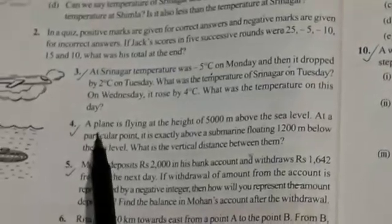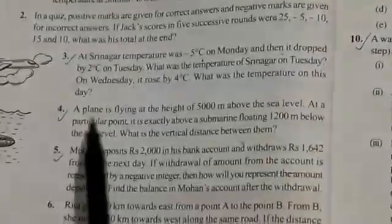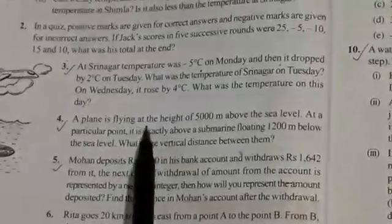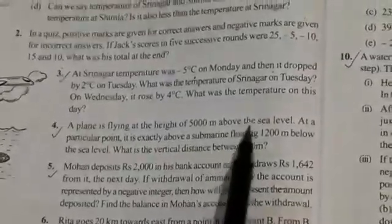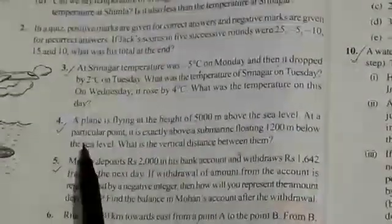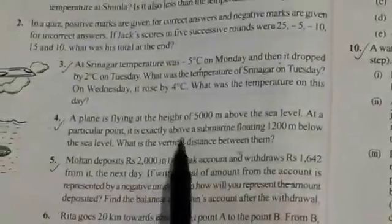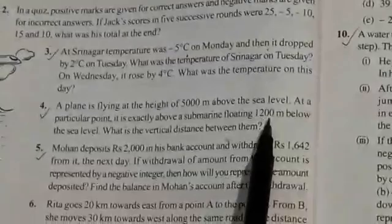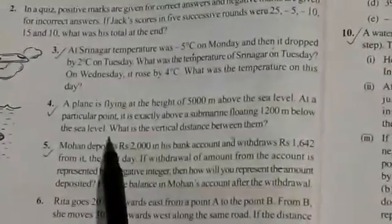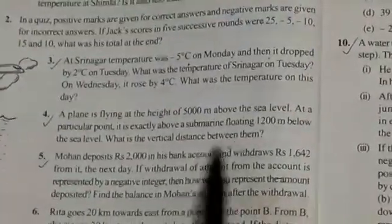Dear children, now we solve question number 4 from exercise 1.1. A plane is flying at the height of 5,000 meters above the sea level at a particular point. It is exactly above a submarine floating 1,200 meters below the sea level. What is the vertical distance between them?